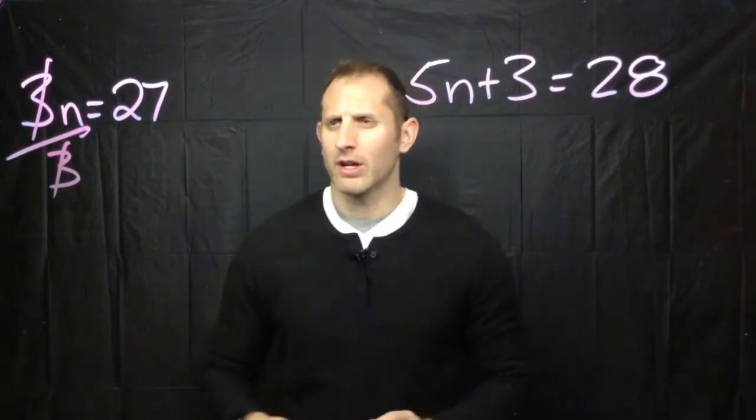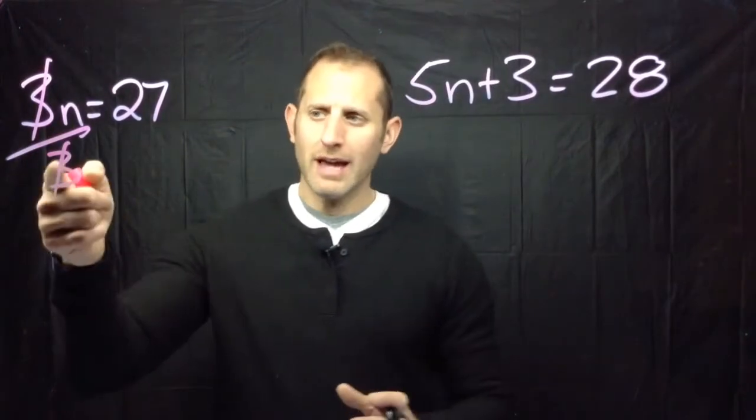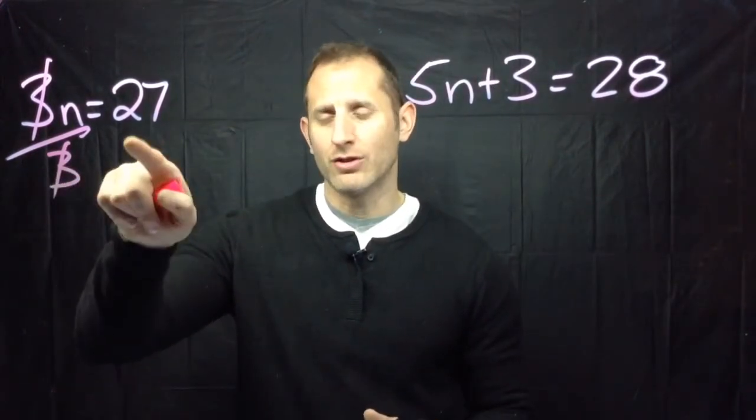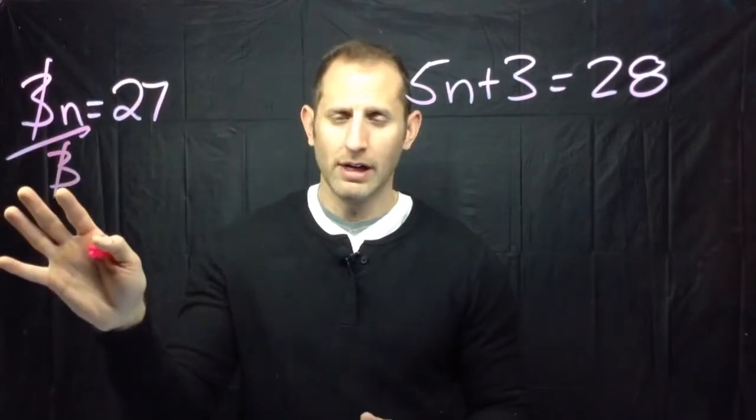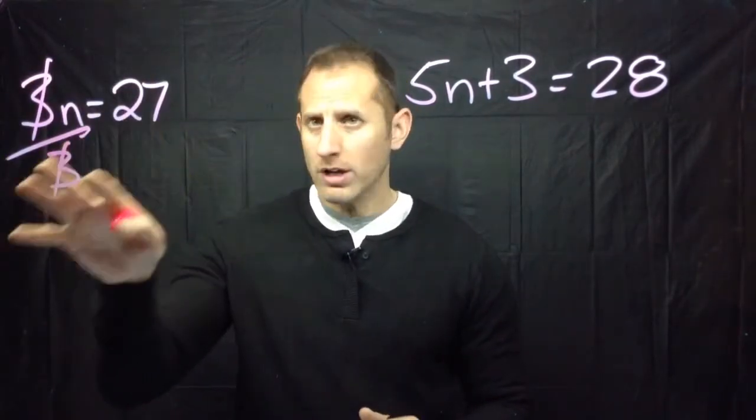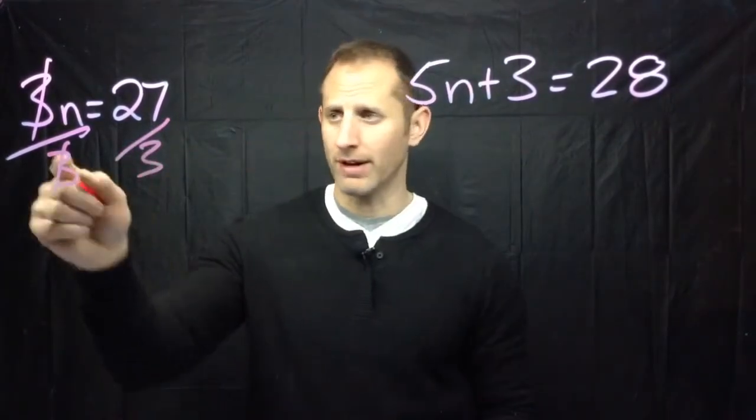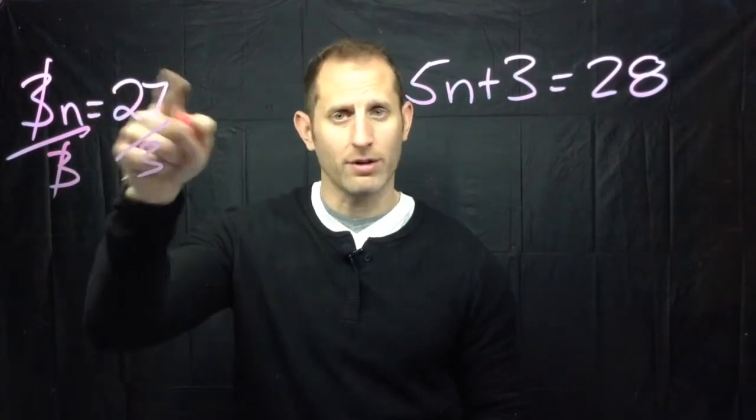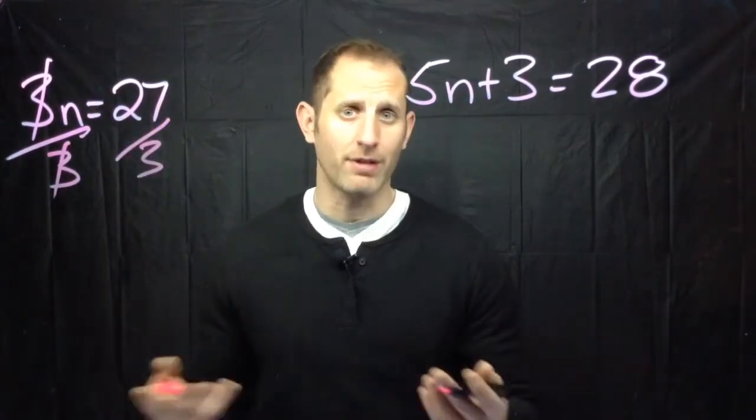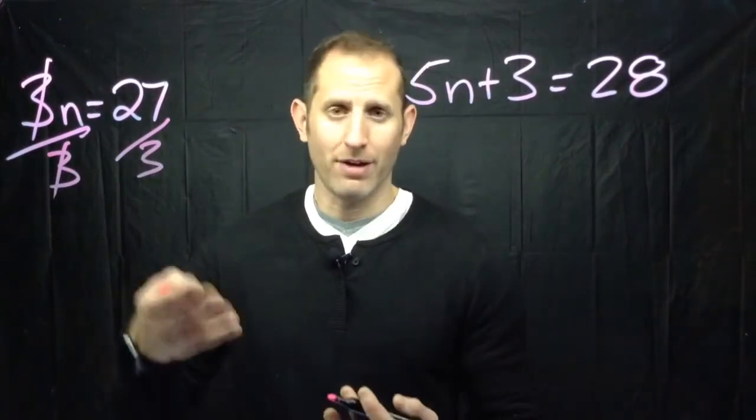But you remember how just a couple of seconds ago I talked about how everything needs to stay in balance? Well if I divide this by three and don't do anything to the other side then it's going to be way off. So keep in mind that what you do to one side you have to do to the other. So in this case if I divided by three what I want to do is divide this by three as well. It is on the other side of equals. So that's how I'm going to keep things in check. Divide each side by threes.